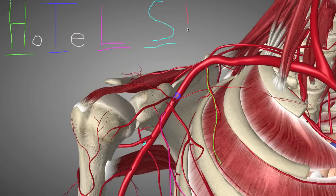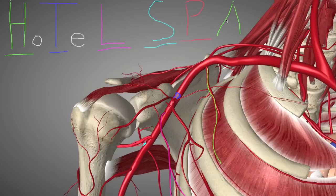In red here we have the Posterior Humeral Circumflex Artery, moving around the posterior side of the humeral neck and wrapping around, which is why it's called the Posterior Humeral Circumflex Artery. In this greenish color we have the Anterior Humeral Circumflex Artery, which moves around the front of the humeral neck and anastomoses — or connects to — the Posterior Humeral Circumflex Artery. Those two arteries wrap around the humeral neck and supply that region with blood.